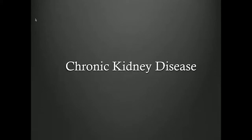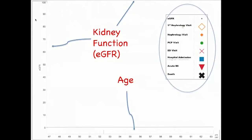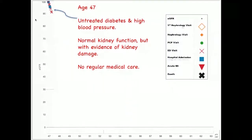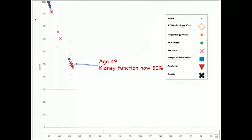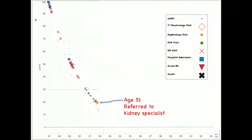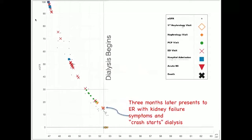Let me start with chronic kidney disease. This is the story of somebody who came into the hospital here at Duke. On the y-axis is EGFR, which gives you some clue about what their kidney function level is like, and on the x-axis is age. He first presented at age 47 with untreated diabetes and high blood pressure, normal kidney functioning but with some evidence of kidney damage. By age 49, his kidney functioning was half of what it should be. At age 51, his kidney functioning was at 20% and he was referred to a kidney specialist.